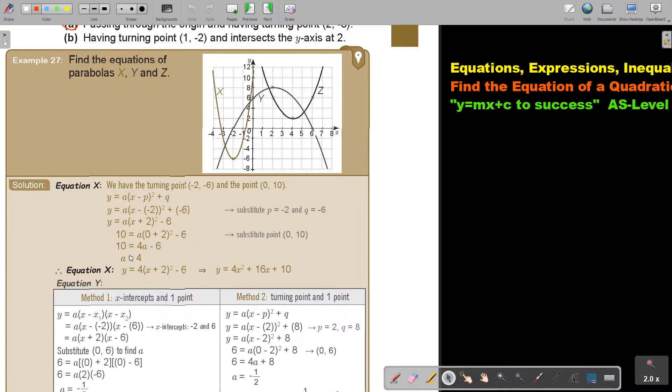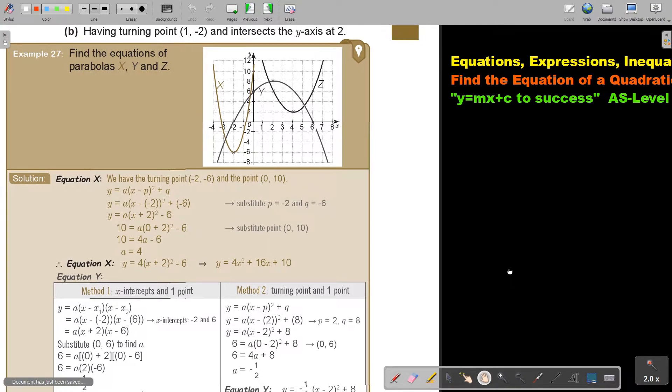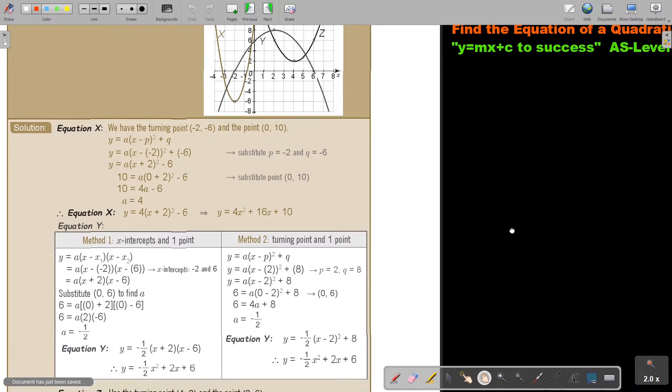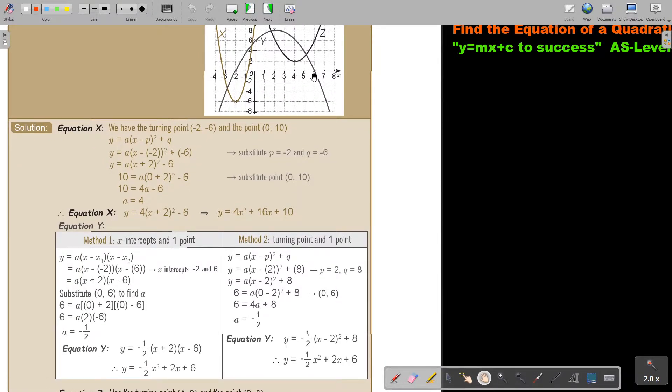Then I go to equation y. Now let's look at y. I have nice x-intercepts at negative 2 and 6, and an extra point. I did it on both methods here, and this is nice to show you that you can either use the x-intercepts as well as the extra point. So I get this, I substitute the extra point, I get my value of a, and then I simplify.